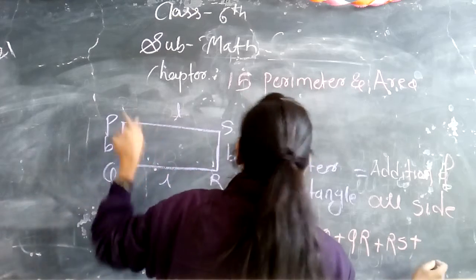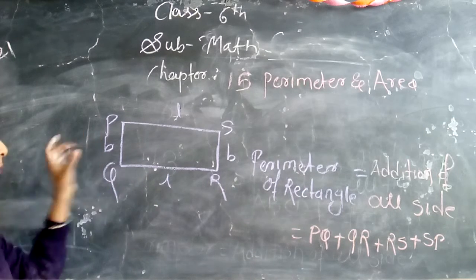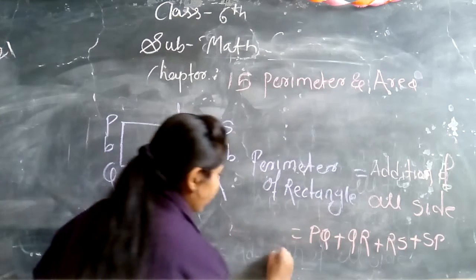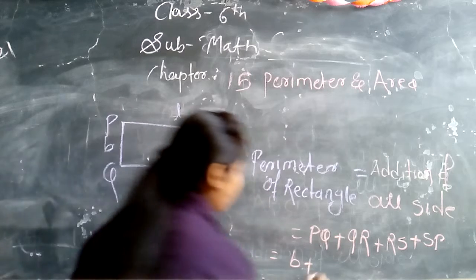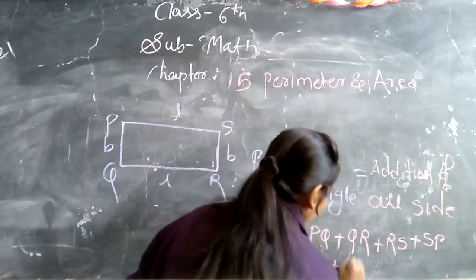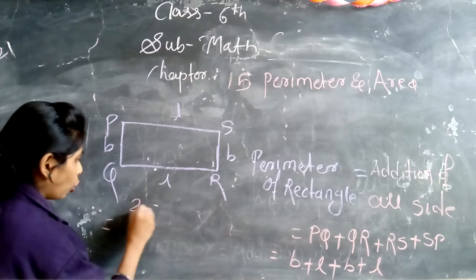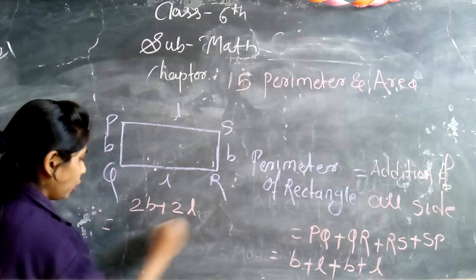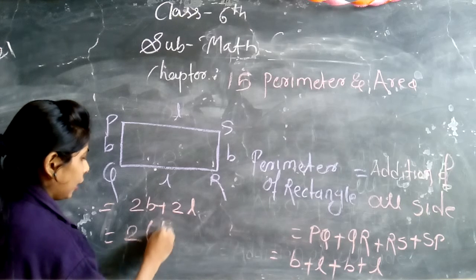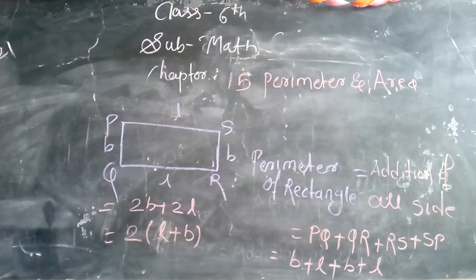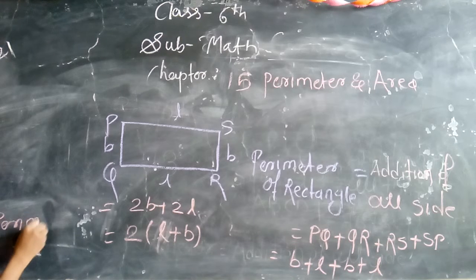We have two breadths and two lengths, so we will get two lengths plus two breadths. Length plus length plus breadth plus breadth. So this is the perimeter of rectangle.